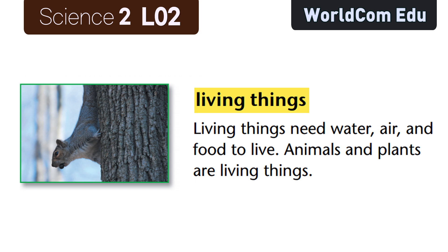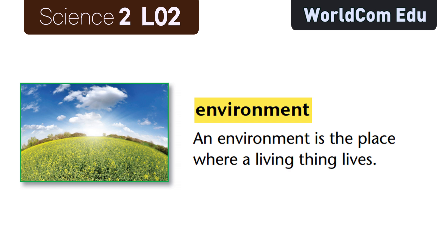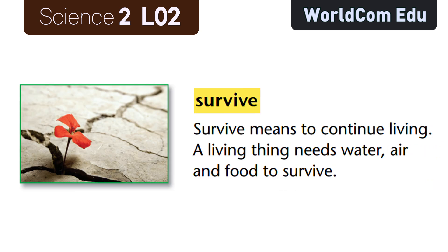Lesson two: Living things versus non-living things. Living things need water, air, and food to live — animals and plants are living things. Non-living things do not need water, air, or food — rocks and water are non-living things. An environment is the place where a living thing lives. Survive means to continue living — a living thing needs water, air, and food to survive.